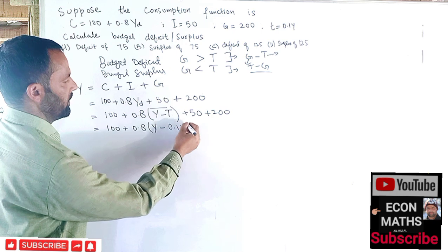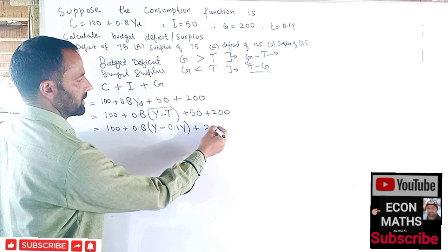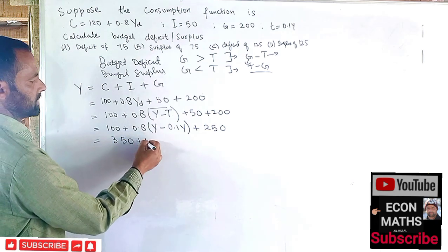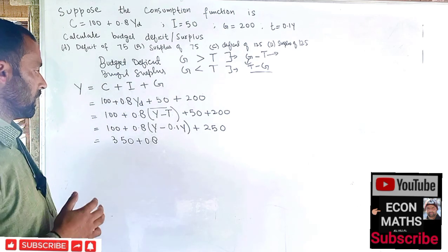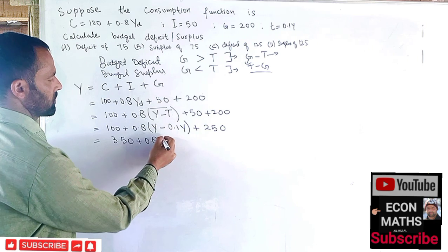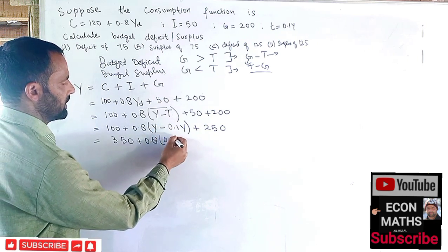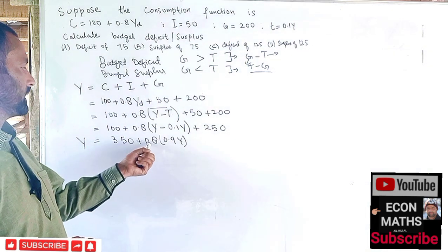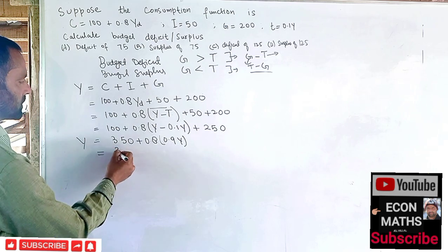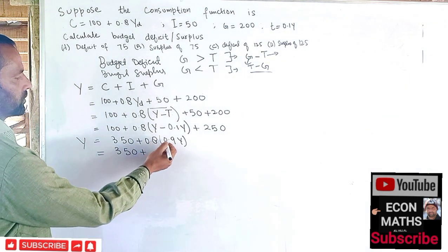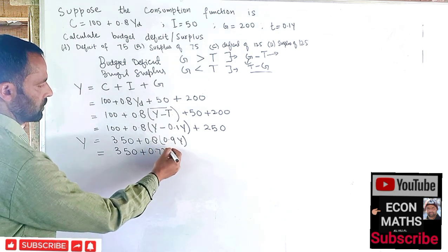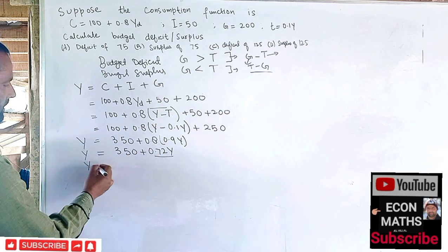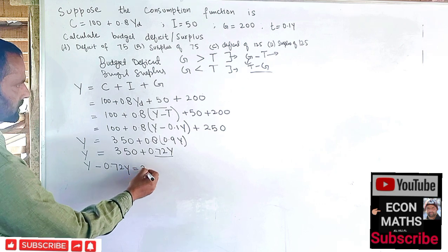Combining constants: 200 + 50 = 250, so we have Y = 350 + 0.8(Y − 0.1Y). Now Y − 0.1Y = 0.9Y, so this becomes Y = 350 + 0.8 × 0.9Y = 350 + 0.72Y. Transposing: Y − 0.72Y = 350.